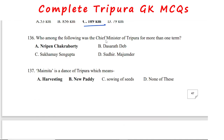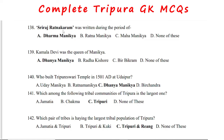The Chief Minister of Tripura who served for more than one term was Nripen Chakravarti. Sriraj Ratnakar was written during the period of Dharmamanika. Kamala Devi was the queen of Maharaja Dhanamanika.